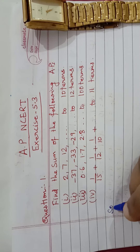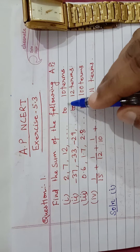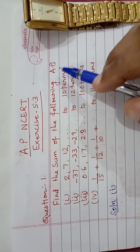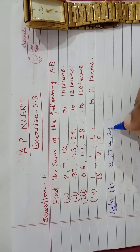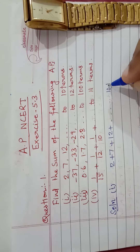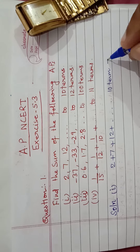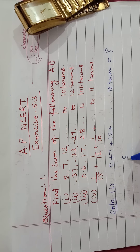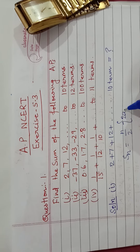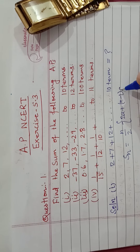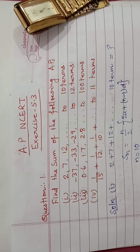The first question is 2, 7, 12, and so on up to ten terms. Find the sum of the following arithmetic progression. So we have 2 plus 7 plus 12 and we will take ten terms. What will be the sum of the ten terms? As we know that S_n is equal to n by 2 times 2a plus n minus 1 into d.